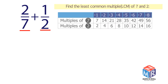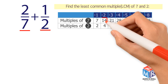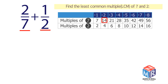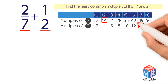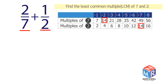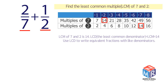The multiples of 7 are 7, 14, and so on. The multiples of 2 are 2, 4, 6, and so on. Find the smallest number that appears in both lists. The least common multiple of 7 and 2 is 14.